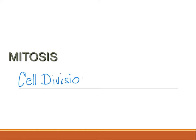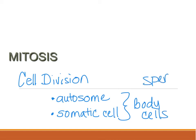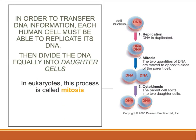Cell division, or mitosis. We talked about how DNA divides — now let's talk about how the entire cell divides. As DNA divides, so does the cell. When we talk about mitosis, we're talking about autosomes, or somatic cells. These are non-sex cells — not sperm and egg — they're the rest of the body cells. We'll get to sperm and egg with meiosis.